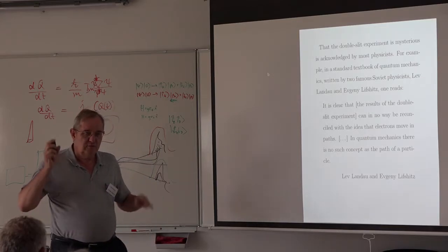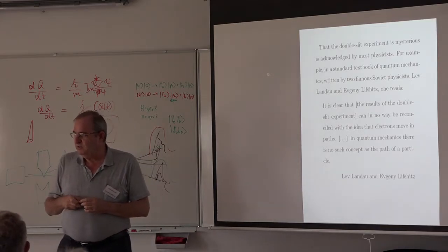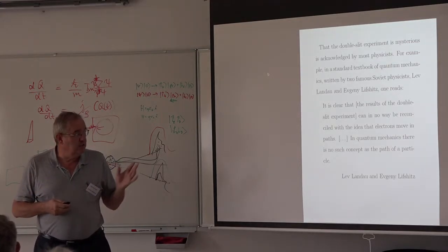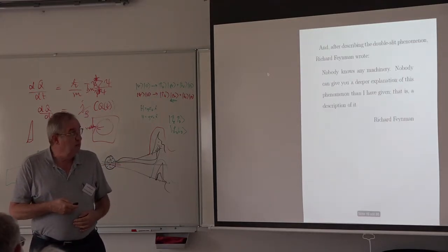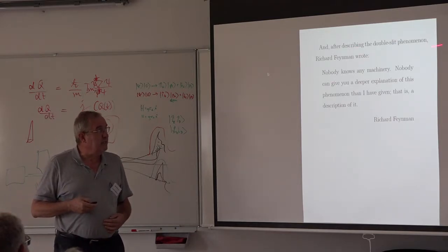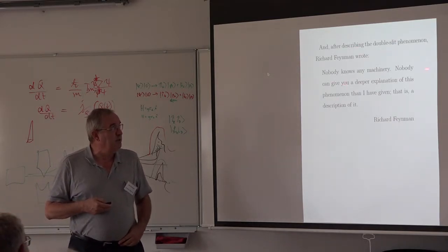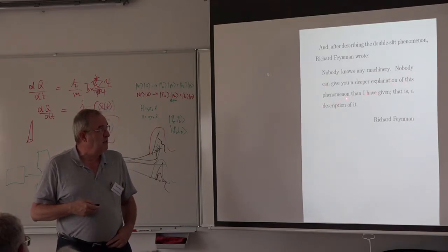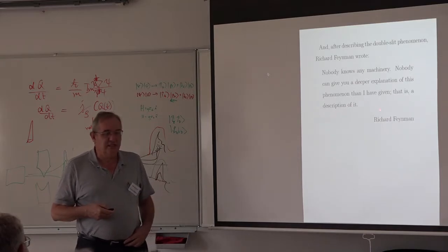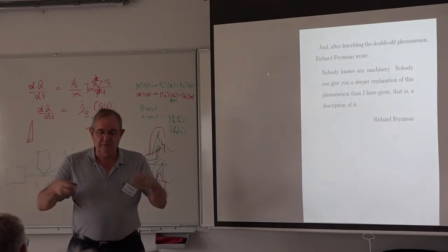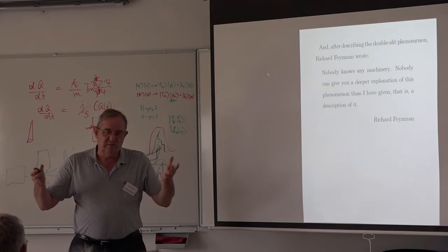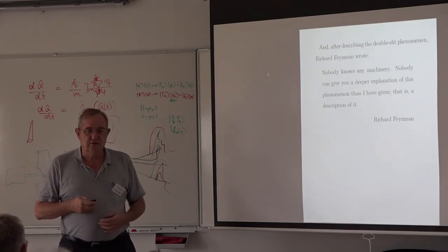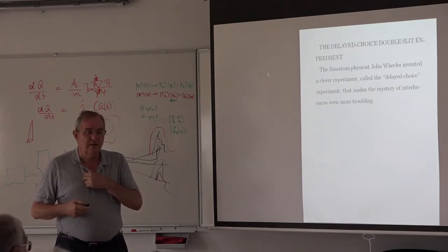This statement, which has been taught to Soviet physicists and to many others in the world, is just false. And Feynman says the same thing: nobody knows any machinery, nobody can give you a deeper explanation of this phenomenon than I have given — that is the description. But you can give one: de Broglie-Bohm does. Like it or not, I don't care. It doesn't mean it's deep — you're not simply describing the phenomenon; you're saying particles have trajectories that reproduce this phenomenon.